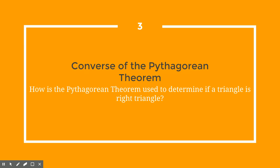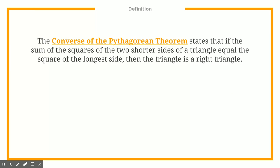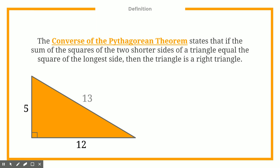Now let's talk about the converse of the Pythagorean theorem and how it's used to determine if something is a right triangle. Before, we found missing side lengths — but how do we determine if a triangle actually is a right triangle? These are called proofs, and they're used to prove something in math. The converse of the Pythagorean theorem states that the sum of the squares of the two shorter sides equals the square of the longest side — just like before.